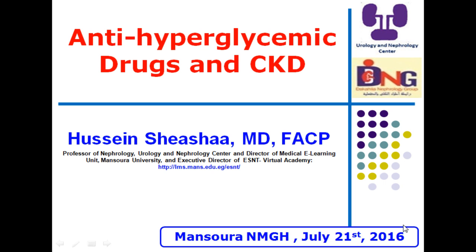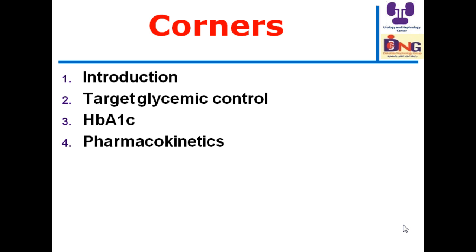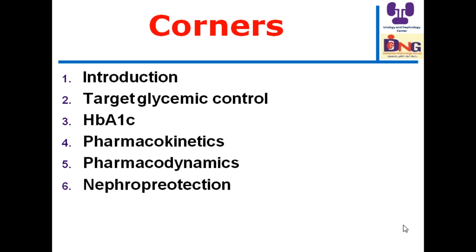Good morning. I'm going to discuss how to use anti-hyperglycemic therapies or drugs in treating a patient with diabetes and kidney dysfunction or chronic kidney disease. I will start with the introduction, then discuss target glycemic control in these patients, whether A1C is the best marker or if there are alternatives, pharmacokinetics and pharmacodynamic interactions of drugs, and importantly how to use anti-diabetic drugs for nephroprotection, and then I'll conclude.